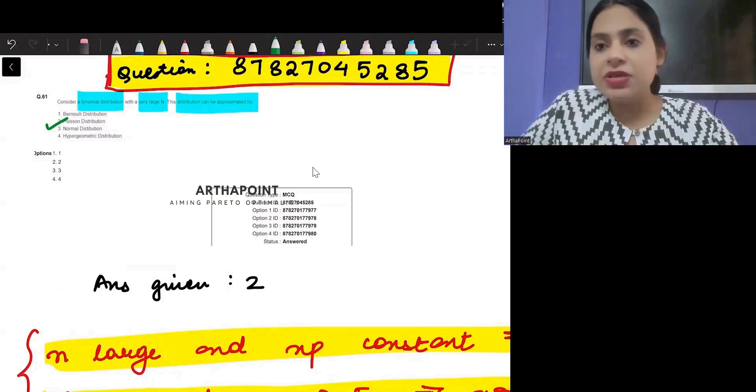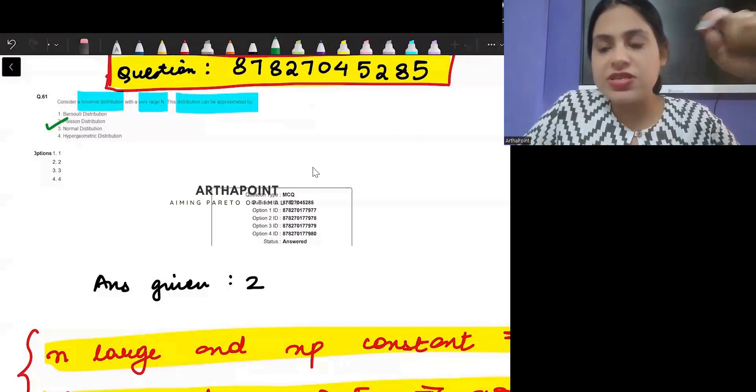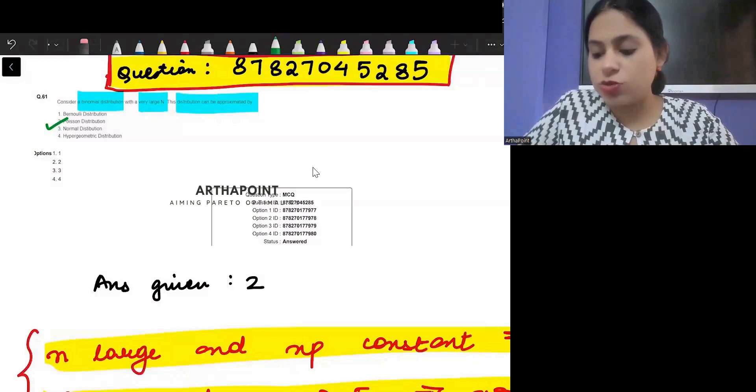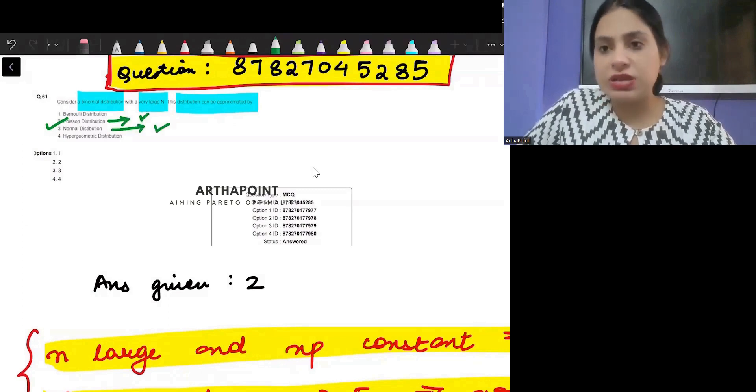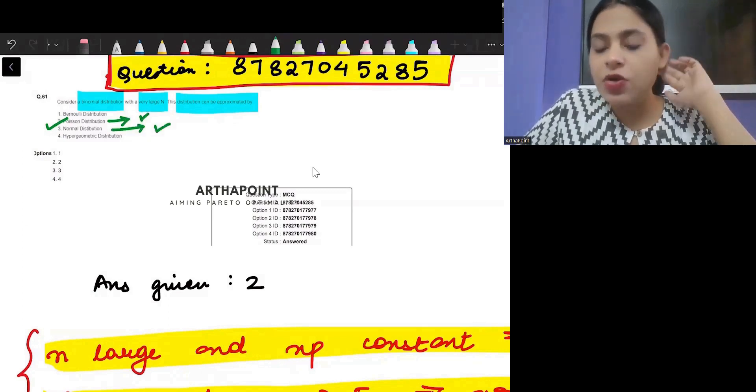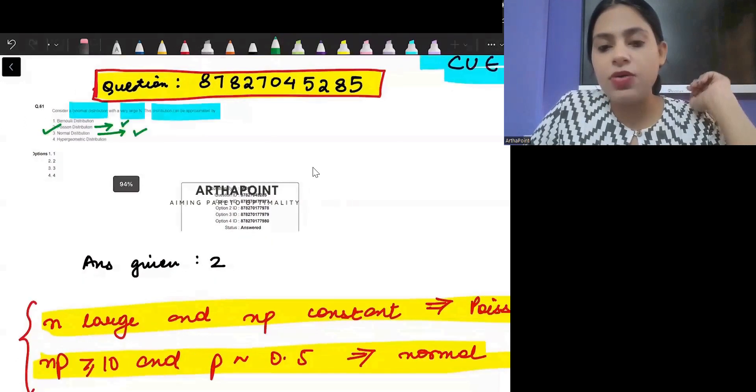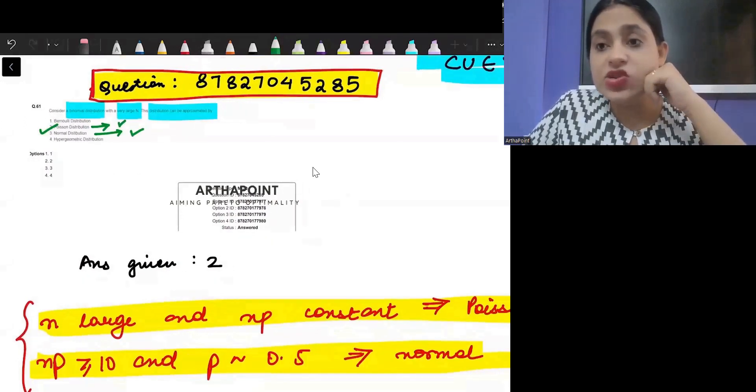And my claim is that both Poisson and normal distribution are correct options. So if someone has marked 2, that should be correct. But if someone has marked 3, that should be correct. Because it does not talk about other conditions.